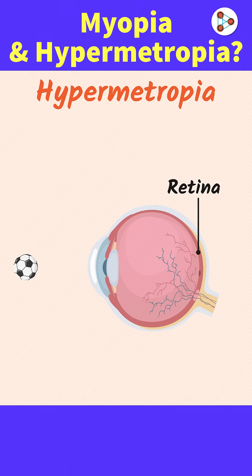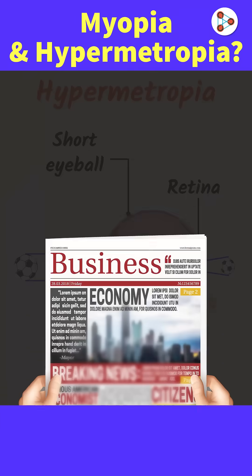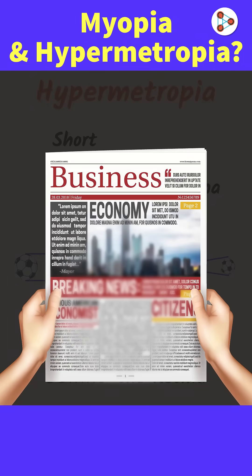When a person has hypermetropia, the image is formed behind the retina, and this may be because the eyeball is too short. A person who isn't able to read what's written in a notebook or newspaper is suffering from hypermetropia.